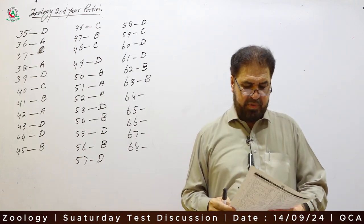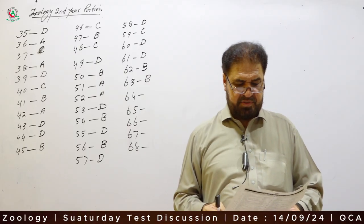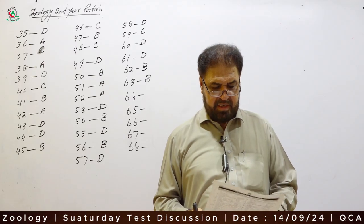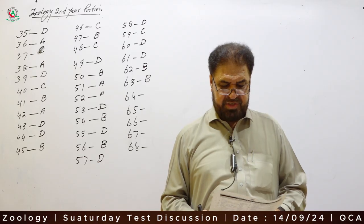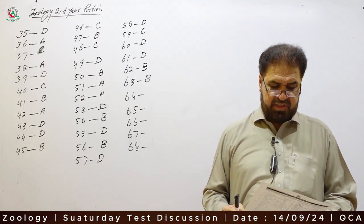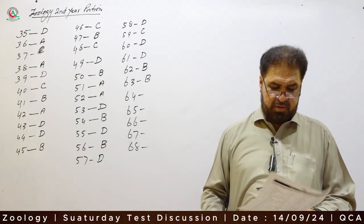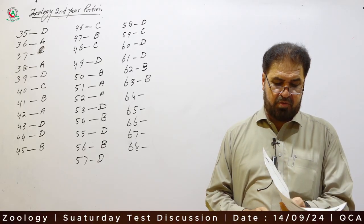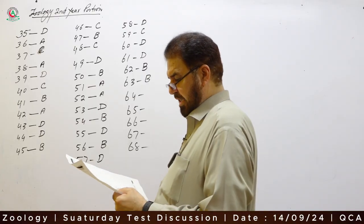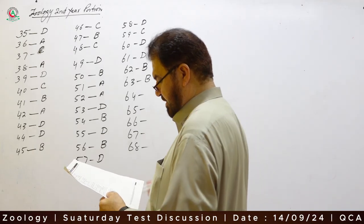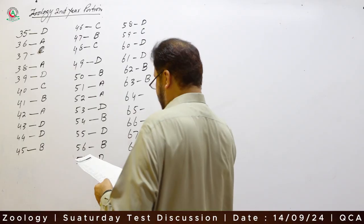Question 64: How many major blood group systems in humans have been recognized by the International Society of Blood Transfusion? There are 30 major blood groups and 200 minor blood groups. Option B — 30 — is correct.